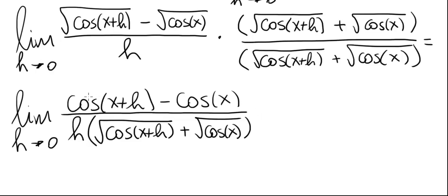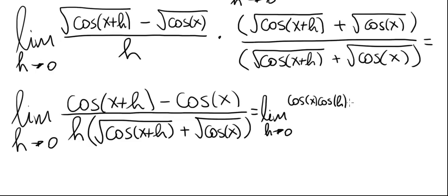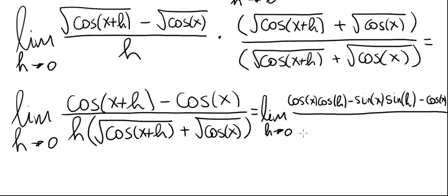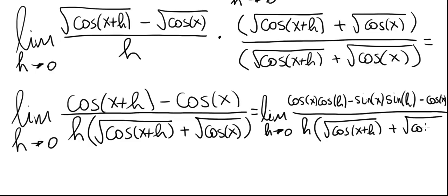Now let's apply result number one to cosine of (x+h). Expanding using the trig identity, we have cosine of x times cosine of h minus sine of x times sine of h, and then minus cosine of x. This is all divided by h times the square root of cosine of (x+h) plus the square root of cosine of x.